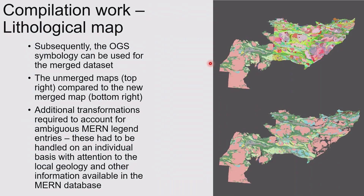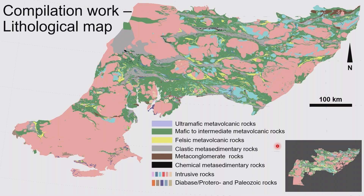That resulted in going from what you see up here, which is a bit psychedelic, to something more uniform. With a couple more steps, we went from this to now a uniform map where you can see ultramafic meta-volcanic rocks, mafic to intermediate rocks, and felsic rocks. You also have the sedimentary assemblages, the sediments in the Abitibi, and then a bunch of intrusive rocks as well. One of the things we decided to do was to lump the mafics and the intermediates together, at least for now.